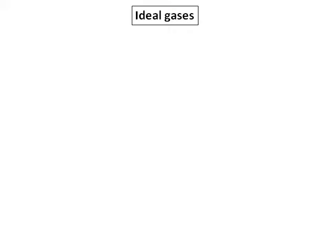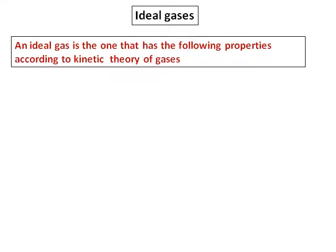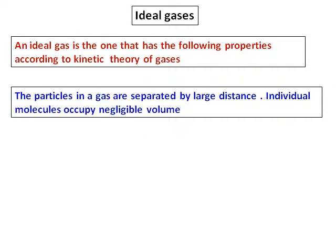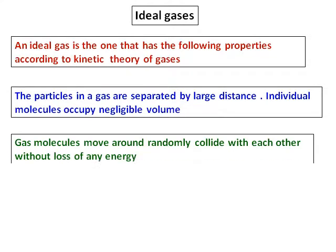Let's just revise what is an ideal gas. An ideal gas is one that has the following properties according to the kinetic theory of gases. The first one is the particles in a gas are separated by large distance, individual molecules occupy negligible volume. So is it always true? You have to go ahead and look at it.